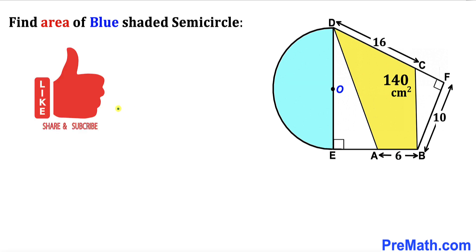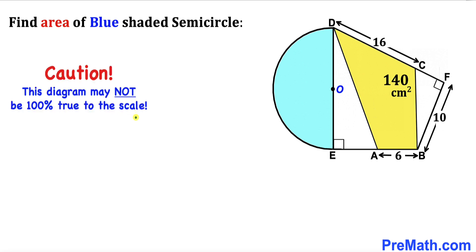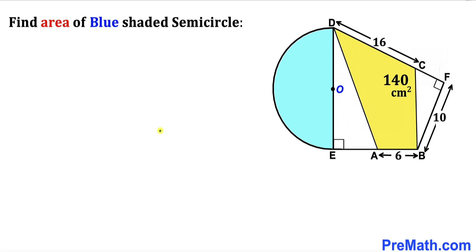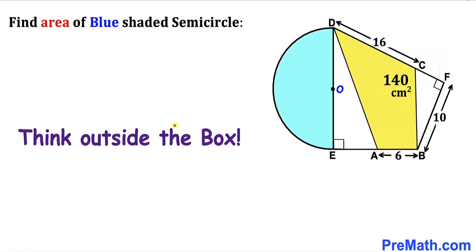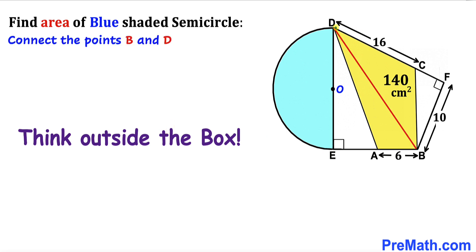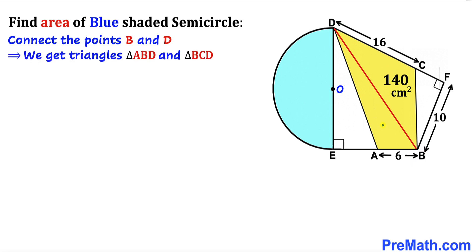Please don't forget to give a thumbs up and subscribe. Note that this figure may not be 100 percent true to scale. Since we are dealing with this tricky kind of problem, we are going to think outside the box. We have connected points B and D, giving us line BD, which creates two triangles: triangle ABD and triangle BCD.